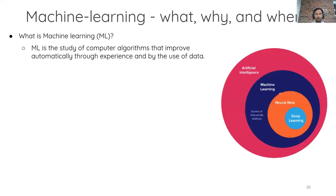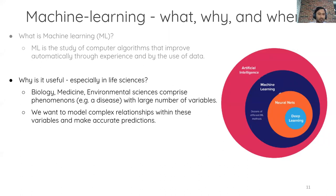So what is machine learning? Machine learning is essentially a computer algorithm that improves automatically using data — lots and lots of data usually. Machine learning is a subset of the broader concept of artificial intelligence. Neural nets are a subset of machine learning, and deep learning is even a subset of neural nets. In life sciences and neuroscience especially, we use machine learning a lot because we are usually presented with a large number of variables — imaging data or genetic data — and it's very difficult to make sense of all these variables without computational help. Machine learning can help us understand complex relationships and make accurate predictions.